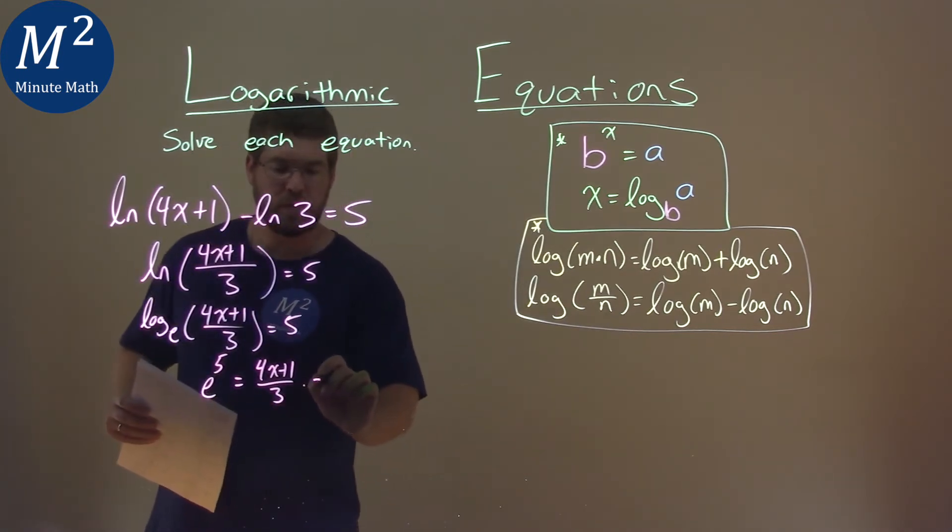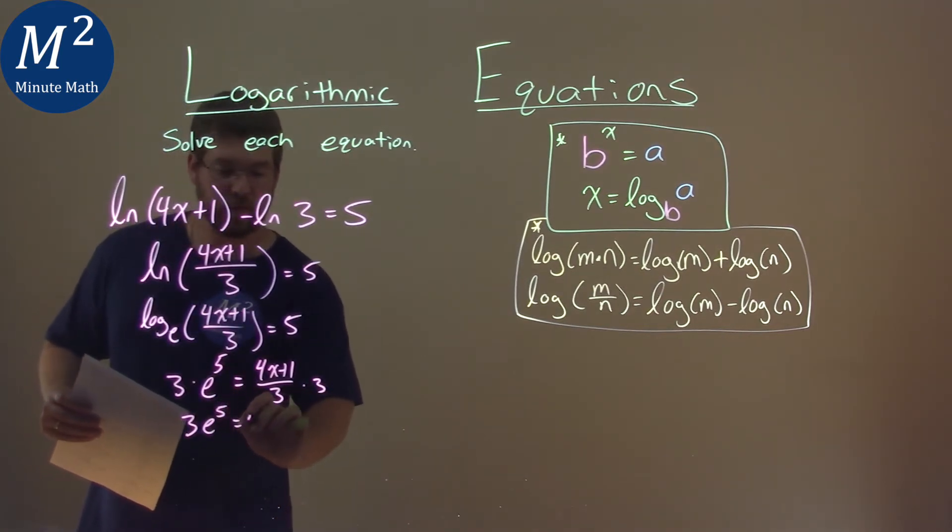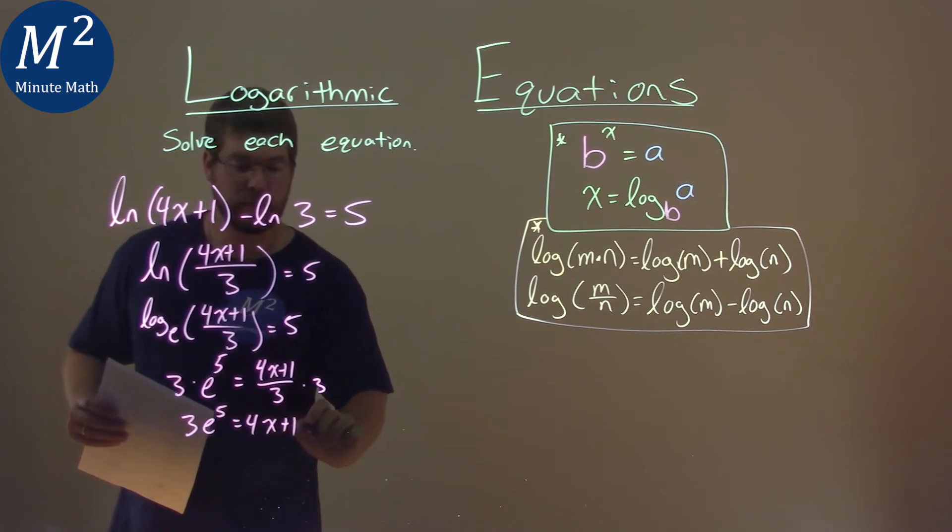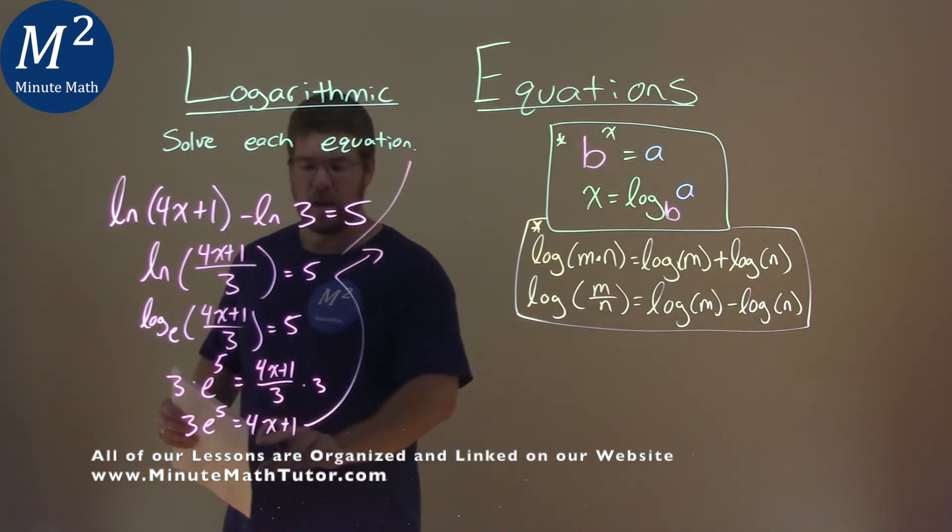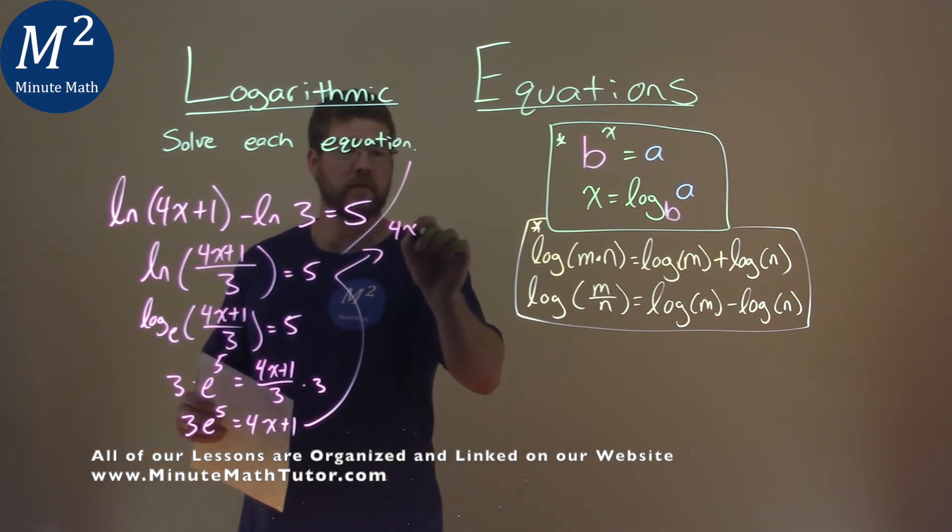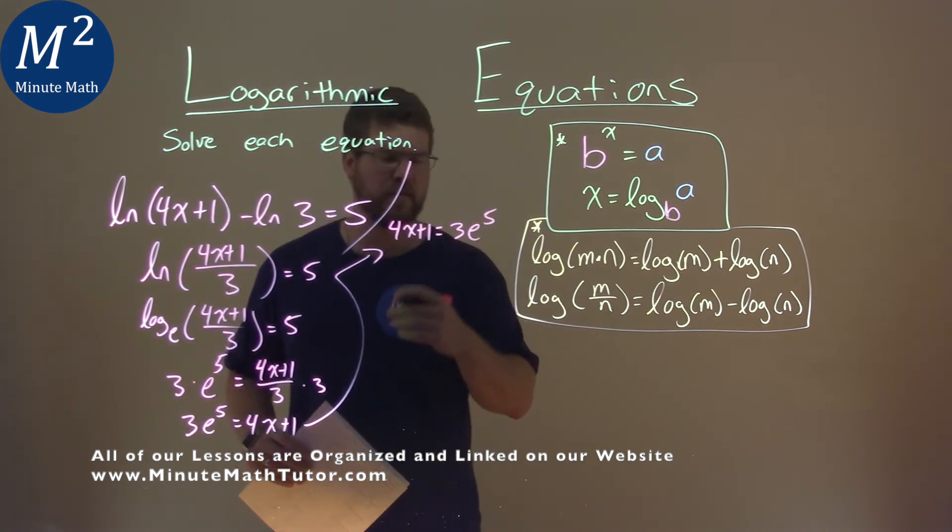Now, I'm going to multiply both sides by 3, and we're left with 3e to the 5th power equals 4x plus 1. I'm going to rewrite that up here to give me some space, and I'm going to flip it around. 4x plus 1 first is equal to 3e to the 5th power, just a little easier to see.